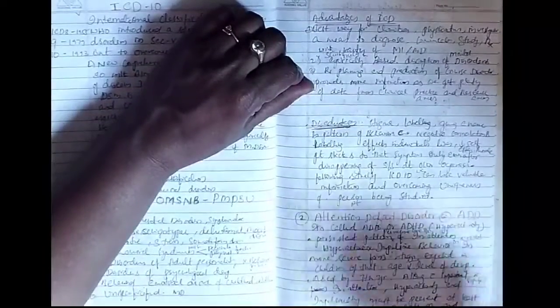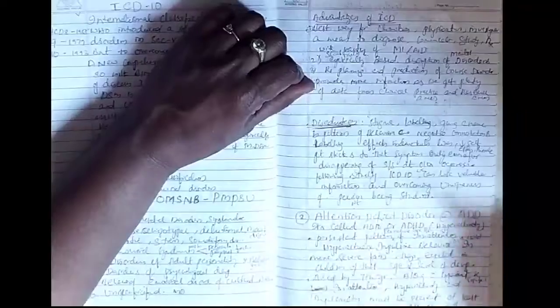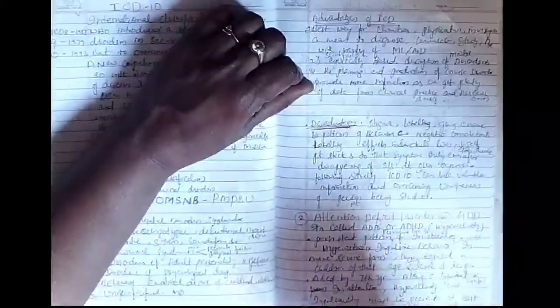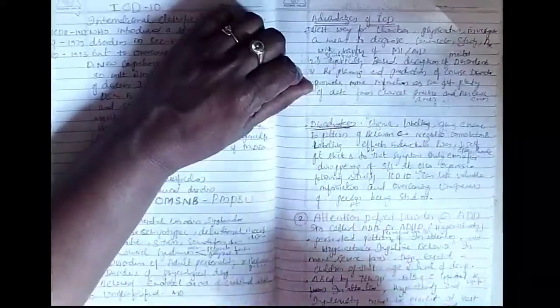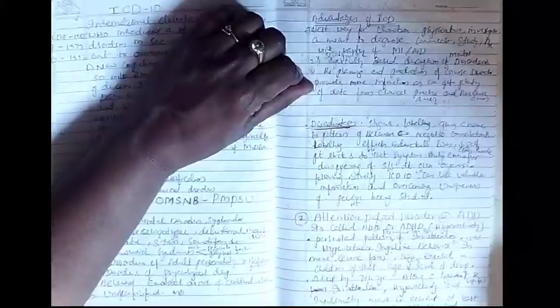Simply we can say persistent pattern of pervasive symptoms like three: inattention, hyperactiveness and impulsive behavior. These three should be there to call it as ADD or ADHD.